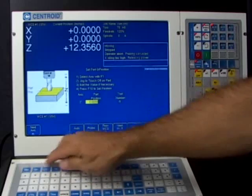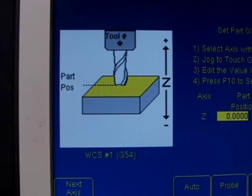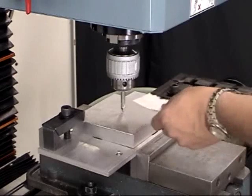Now, to set Z, I'm going to hit F1 next axis. And this is a little different. What we're going to do is come down and touch off the top of the part, but we're going to use a piece of paper which is about two thousandths of an inch thick.